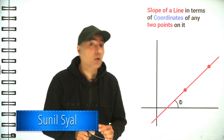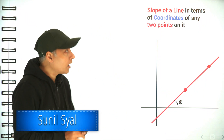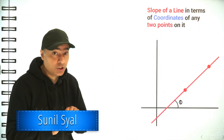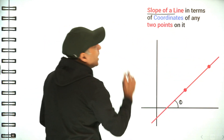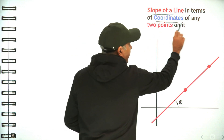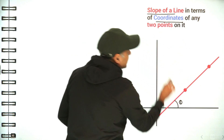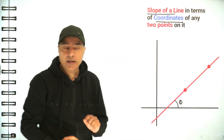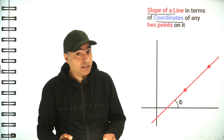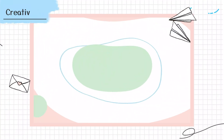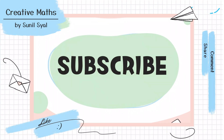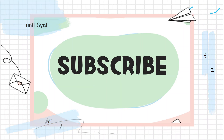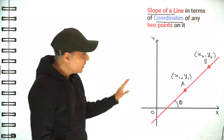Hey guys, in this tutorial we are going to find the relationship between the slope of a straight line and the coordinates of any two points given on it. It's really very easy, so let's do it now.